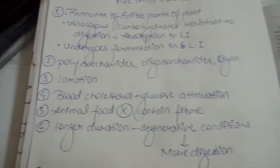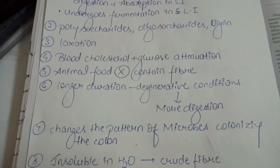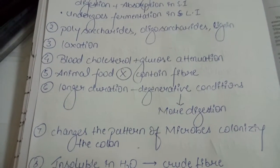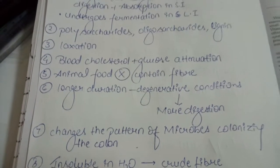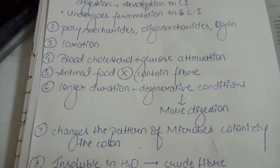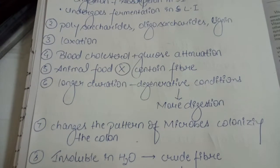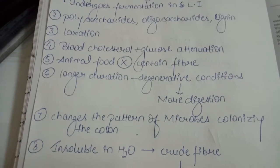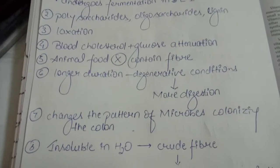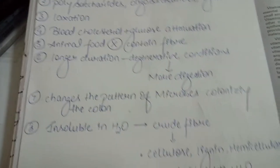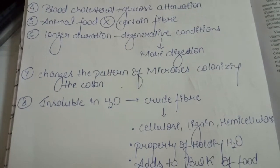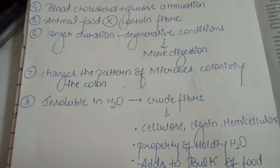A longer duration of degenerative conditions helps more digestion of the fiber. This also changes the pattern of microbes colonizing the colon and thus alters the fermentation products produced in the gut.